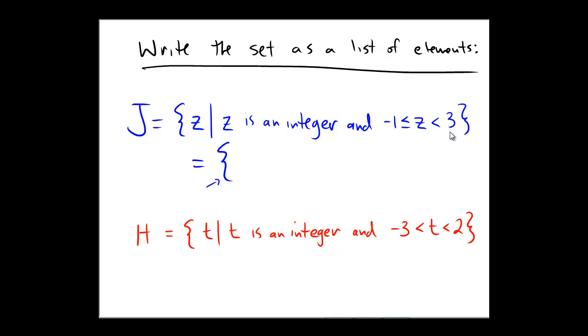But not quite including 3. So the number negative 1 is acceptable because negative 1 is less than or equal to negative 1. So is the number 0 because that's in between negative 1 and 3. So is the number 1, so is the number 2, and notice that the number 3 is not accepted here because 3 is less than, 3 is not less than 3.